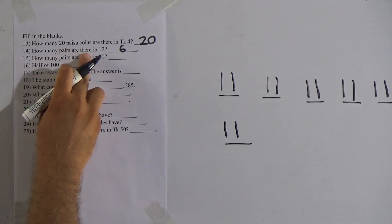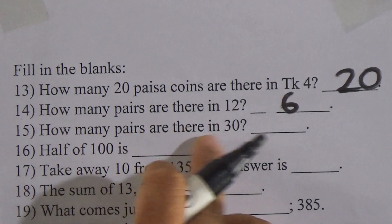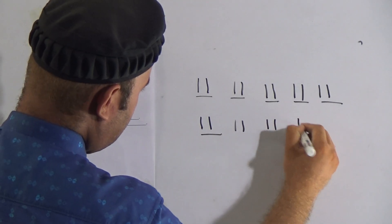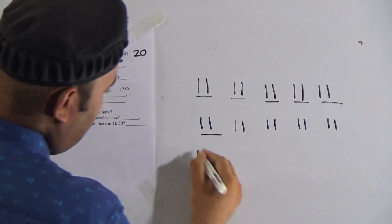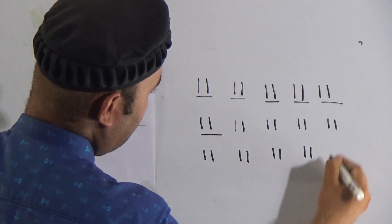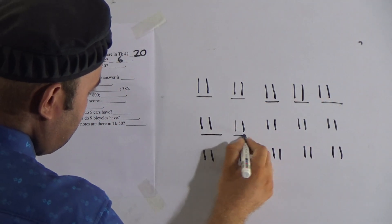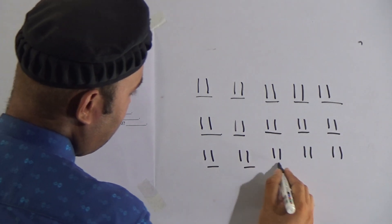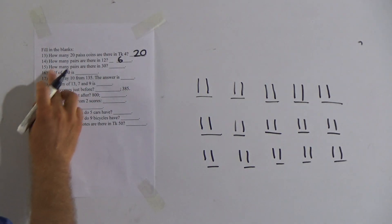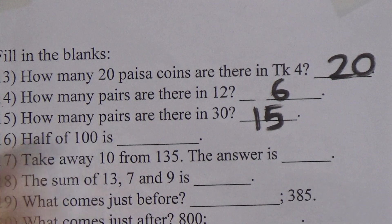How many pairs are there in 12? There are 6 pairs. Number 15: how many pairs are there in 30? Counting in pairs from 1 to 30 gives us 15 pairs. So how many pairs are there in 30? The answer is 15 pairs.